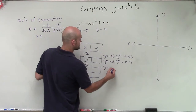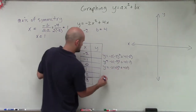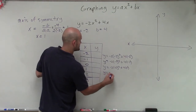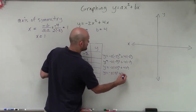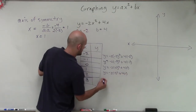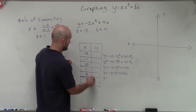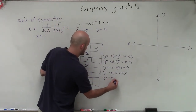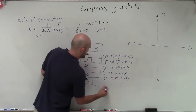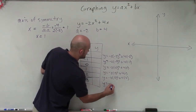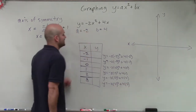Then y equals negative 2 times 0 squared plus 4 times 0. Next, y equals negative 2 times 1 squared plus 4 times 1. Then y equals negative 2 times 2 squared plus 4 times 2. And finally, y equals negative 2 times 3 squared plus 4 times 3.